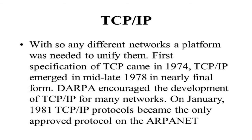The first specification of TCP came in 1974, and TCP/IP emerged in nearly final form in the mid-to-late 1978. TCP/IP is a simple protocol: if you want to be a part of the whole network, you follow that protocol and you can be part of many other networks. When you agree to accept this protocol, you can communicate with anyone in the whole network, regardless of which sub-network you belong to. DARPA encouraged the development of TCP/IP. On January 1, 1983, TCP/IP protocol became the only approved protocol on ARPANET.